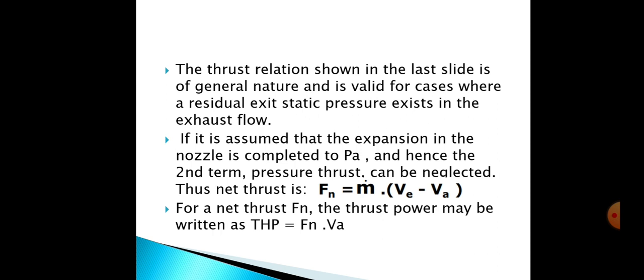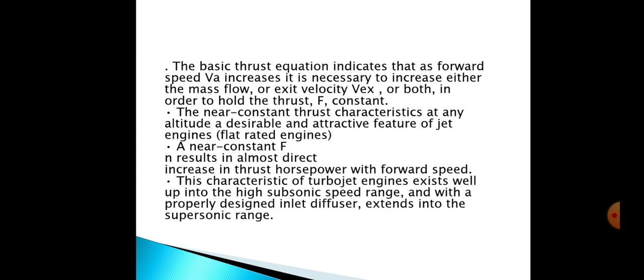For a net thrust Fn, the thrust power may be written as thrust power = Fn·Va. The basic thrust equation indicates that as forward speed Va increases, it is necessary to increase either the mass flow or exit velocity Ve, or both, in order to hold the thrust F constant.